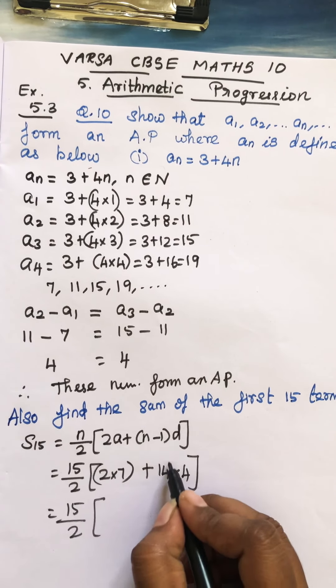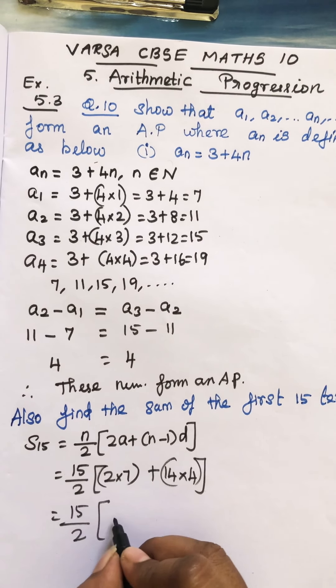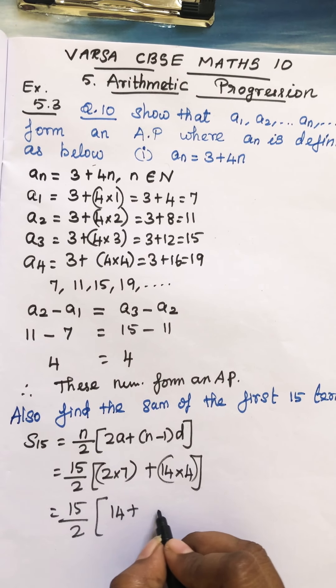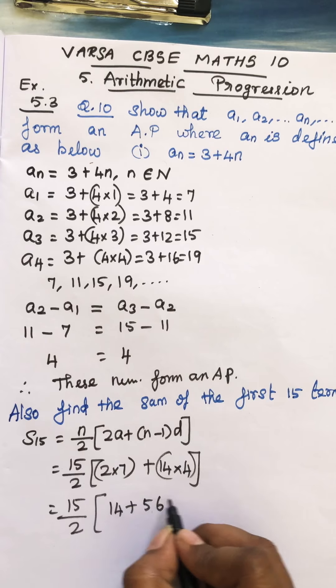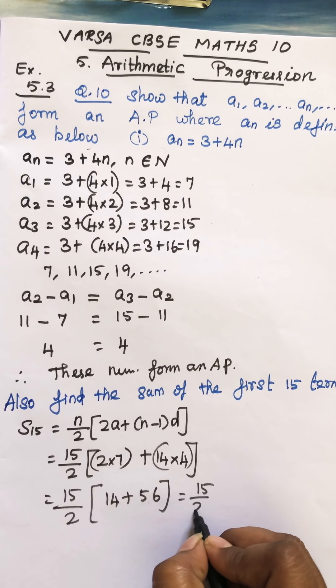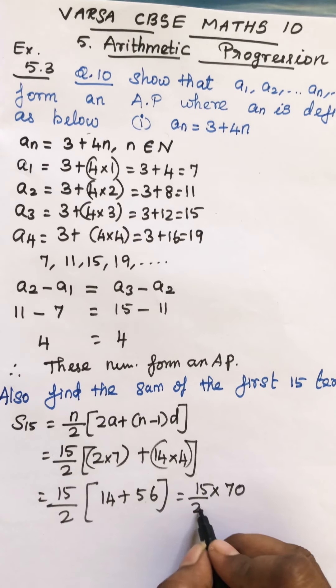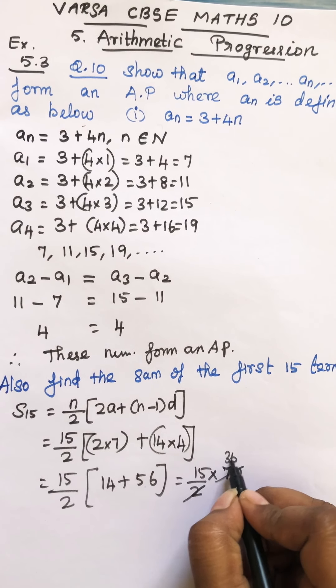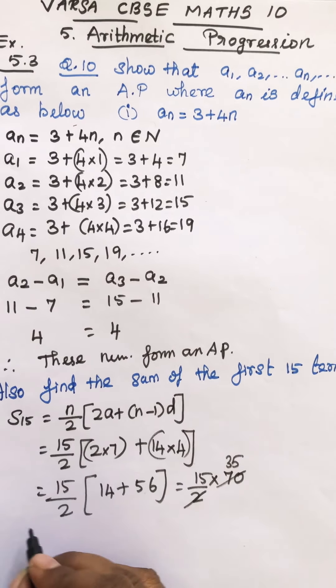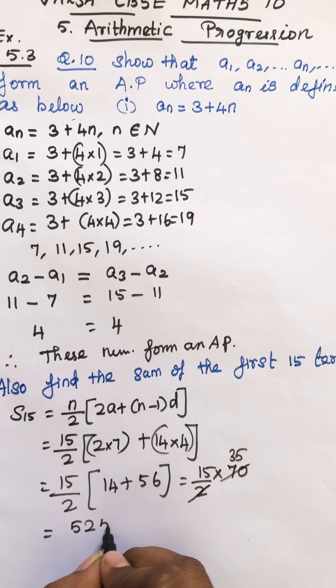So 15 by 2. See students, this is multiplication. Here it is multiplication. First you have to do this. 14 into 4 is 56. So this is 15 by 2, and this is 14 plus 56 equals 70. So you cancel here. This is 35. So 15 into 35, the answer is 525.